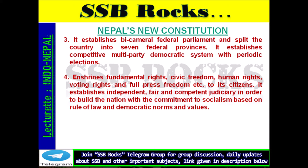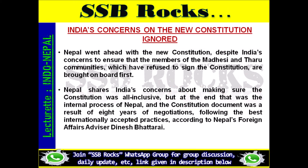India's Concerns on the New Constitution Ignored: Nepal went ahead with the new constitution despite India's concerns to ensure that members of the Madhesi and Tharu communities, who had refused to sign the constitution, were brought on board first. Nepal shared India's concerns about making the constitution all-inclusive, but ultimately it was an internal process of Nepal. The constitution document was a result of eight years of negotiations following the best internationally accepted practices, according to Nepal's foreign affairs advisor Dinesh Bhattarai.